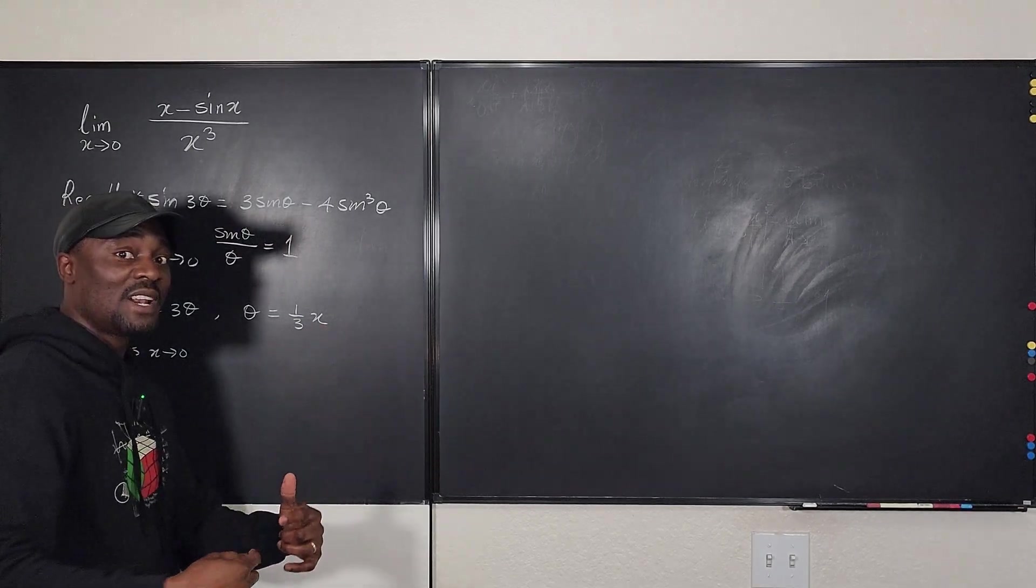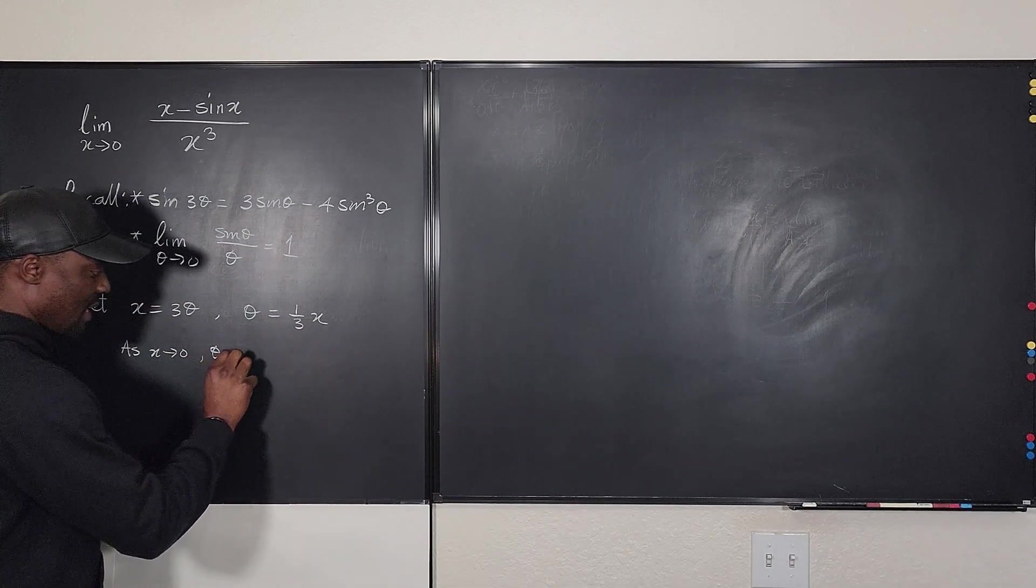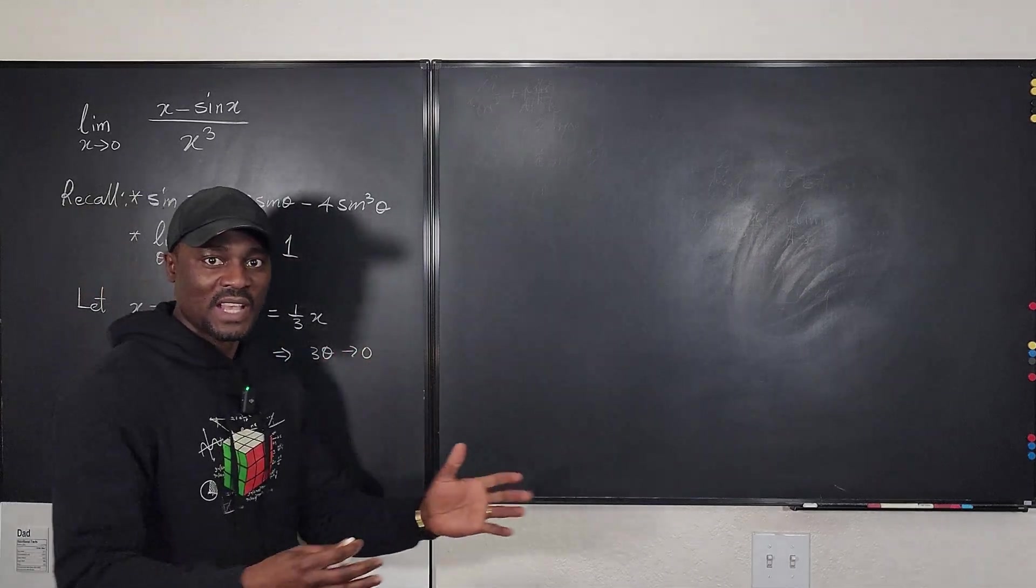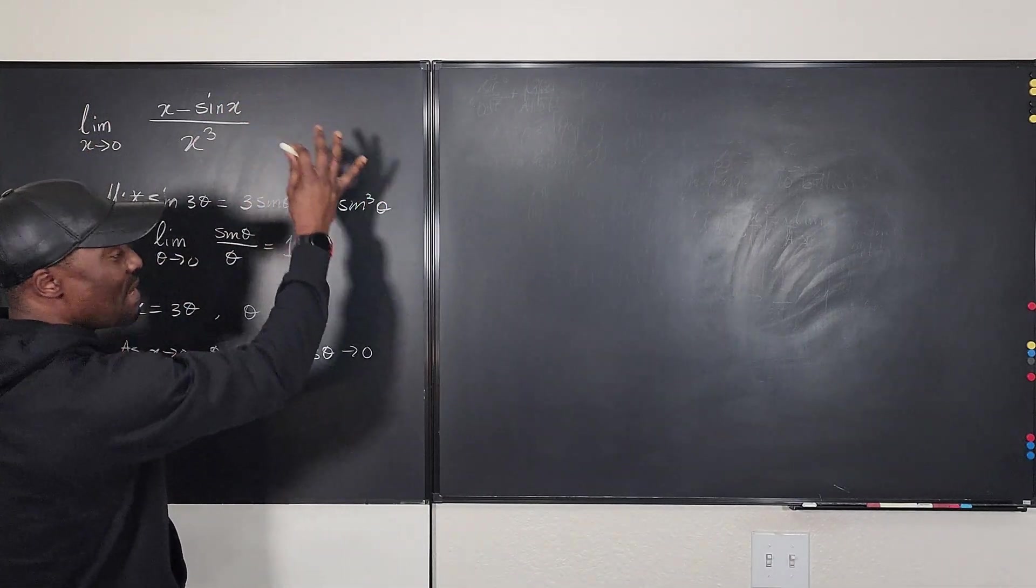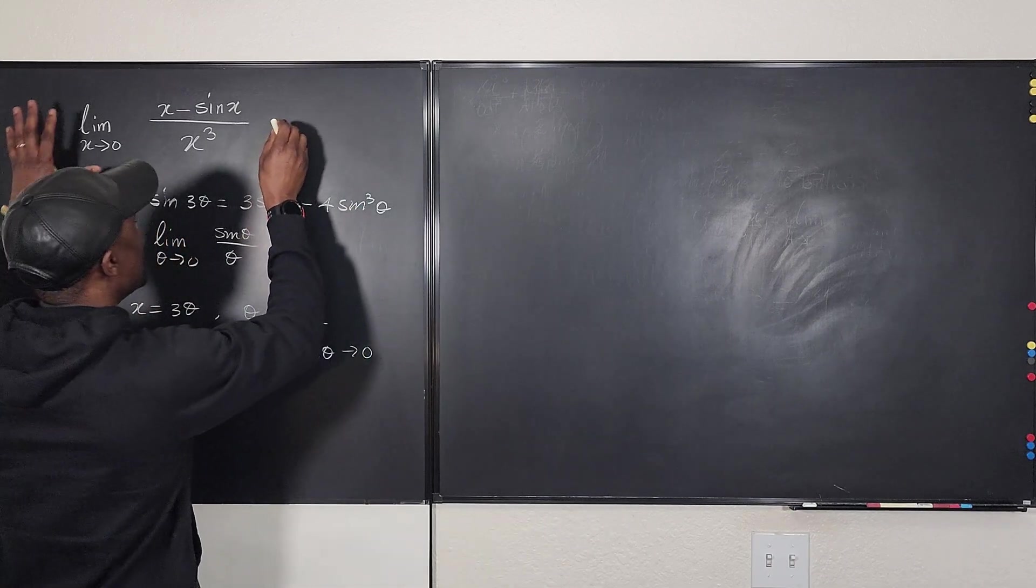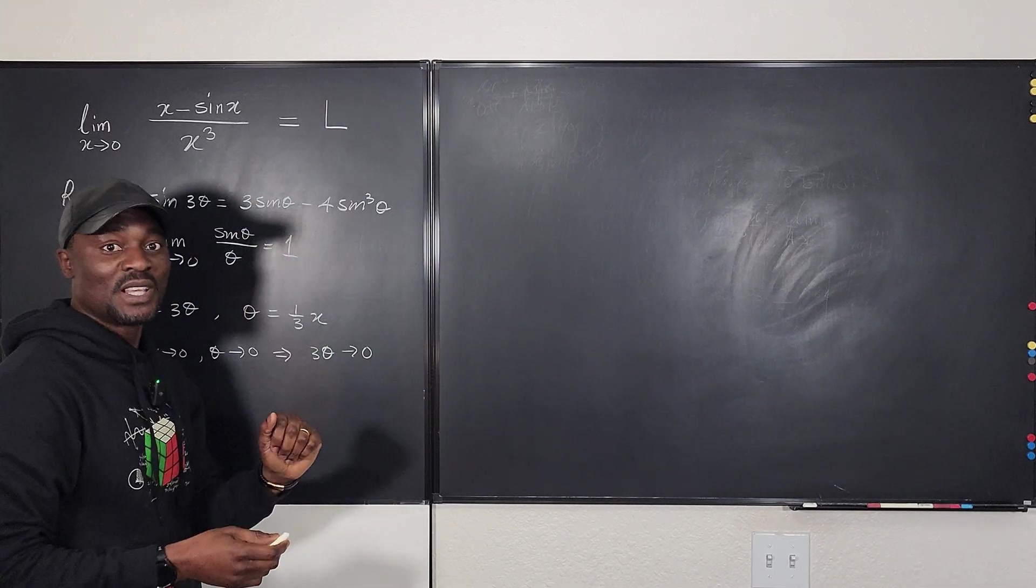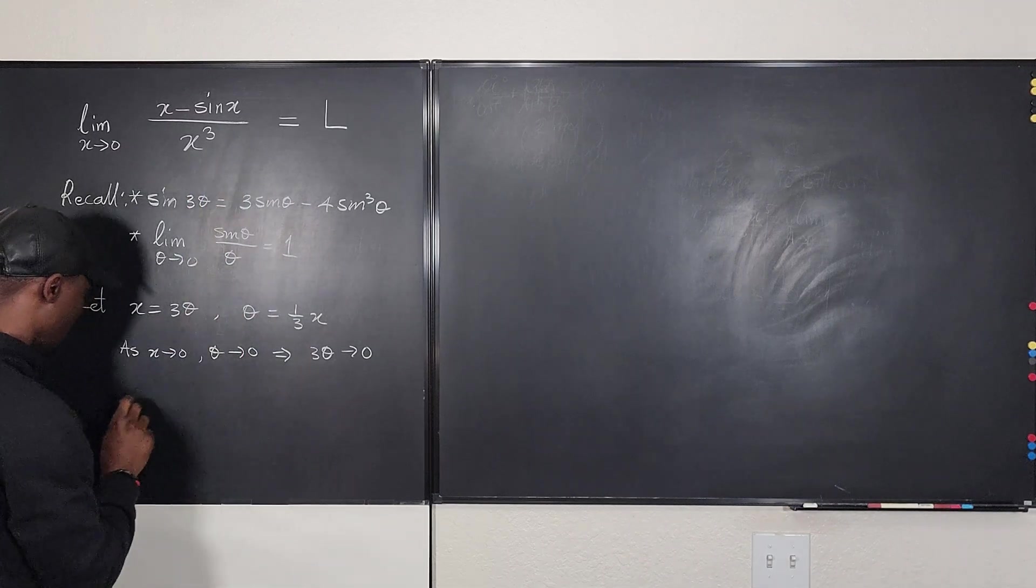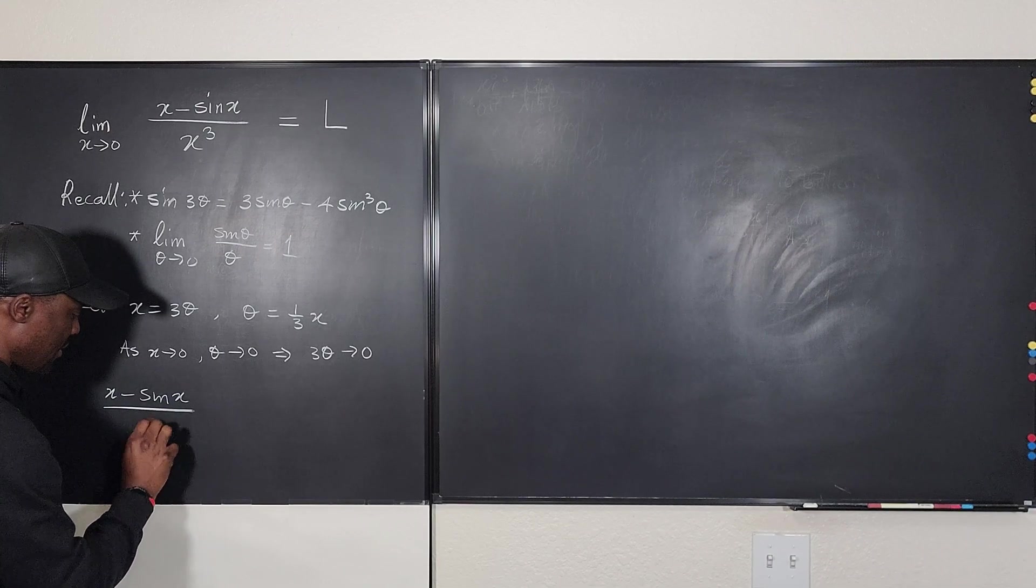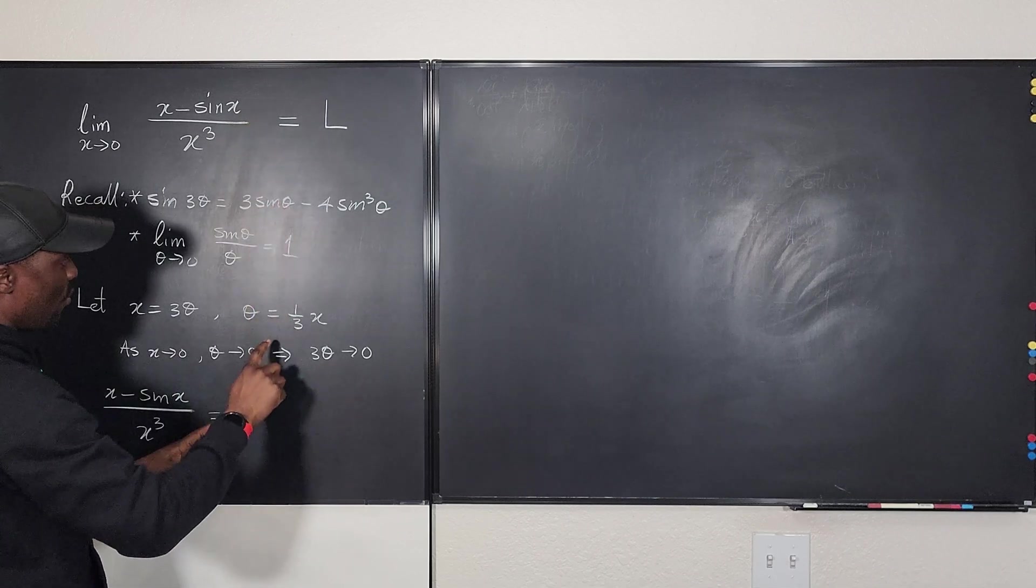So as theta goes, in fact, theta goes faster to 0 than x. So as x goes to 0, theta goes to 0, which also implies that 3 theta goes to 0. So everything goes to 0 as x goes to 0. Which means we can rewrite this limit problem. You know what? I'm going to say let this limit be equal to capital L. Let's just leave it that way because we're going to come back and just use this.